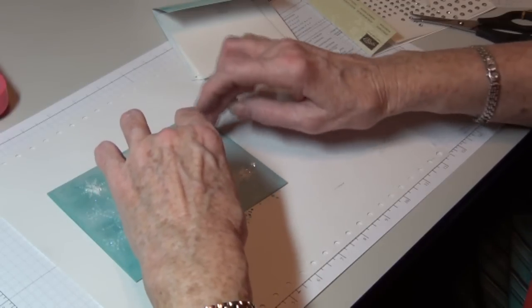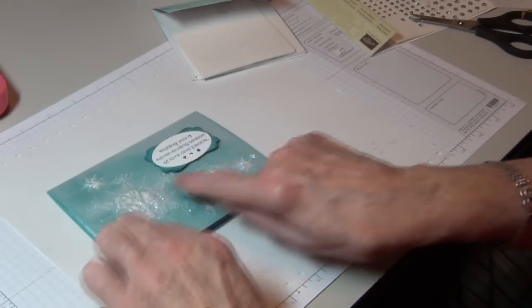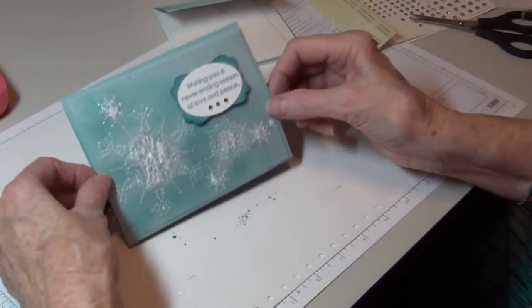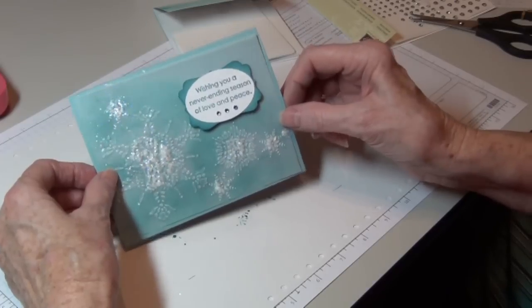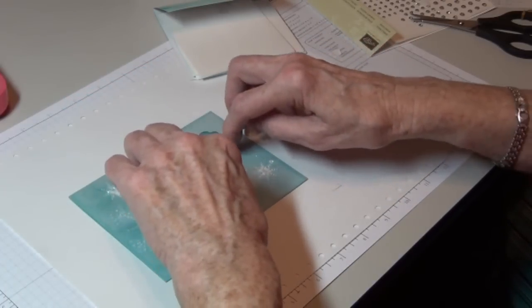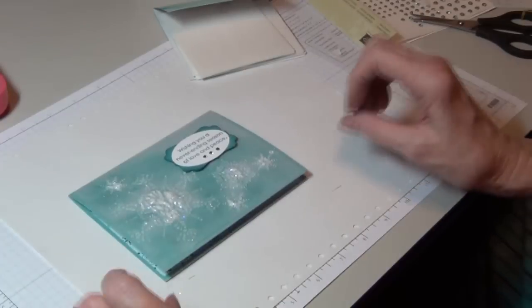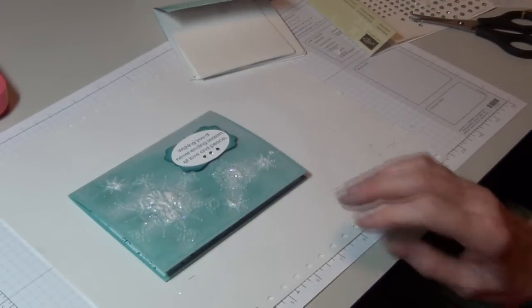And you need to let this dry before you add your gems. As you can see there's quite a bit of glue under there. And that really needs to dry. So I'm going to stop the film for just a moment, let that dry, and then I'll come back and add the gems.